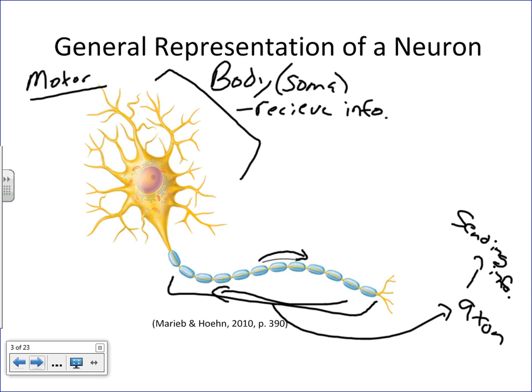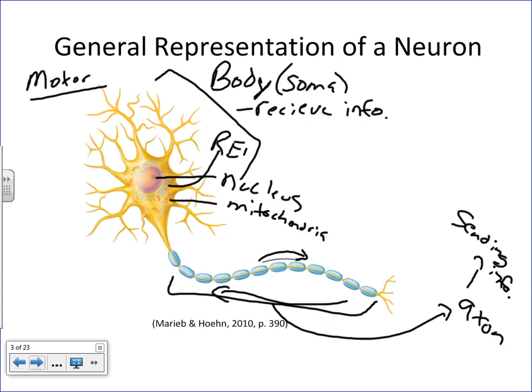Focusing on the cell body: like any other cell, it has a nucleus, mitochondria, rough endoplasmic reticulum, and Golgi — it's manufacturing proteins and needs energy. You'll notice cytoplasmic extensions coming off the cell body — these are called dendrites. When it comes to sending and receiving information, we're talking about chemicals such as neurotransmitters or hormones. These interactions take place at the cell membrane.